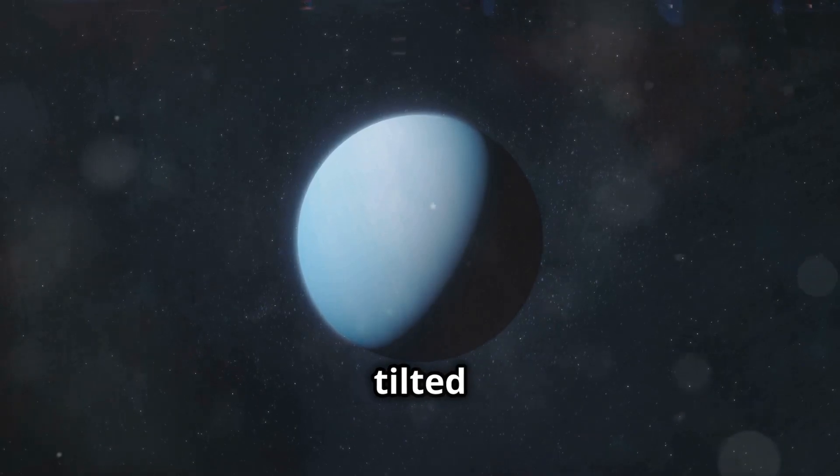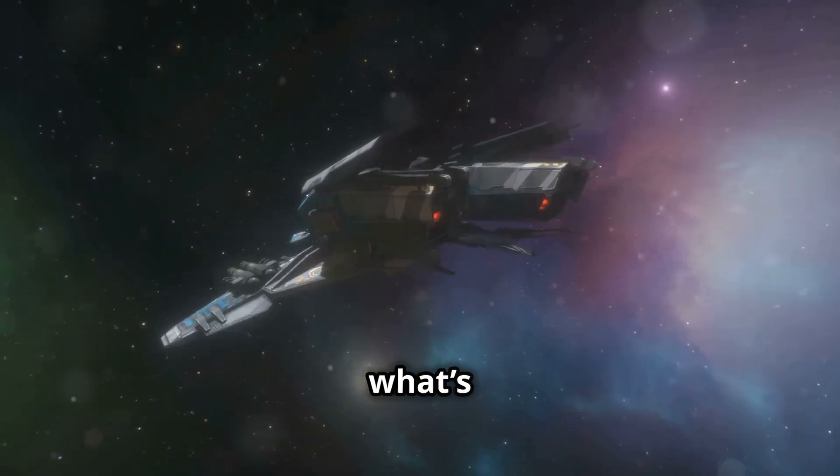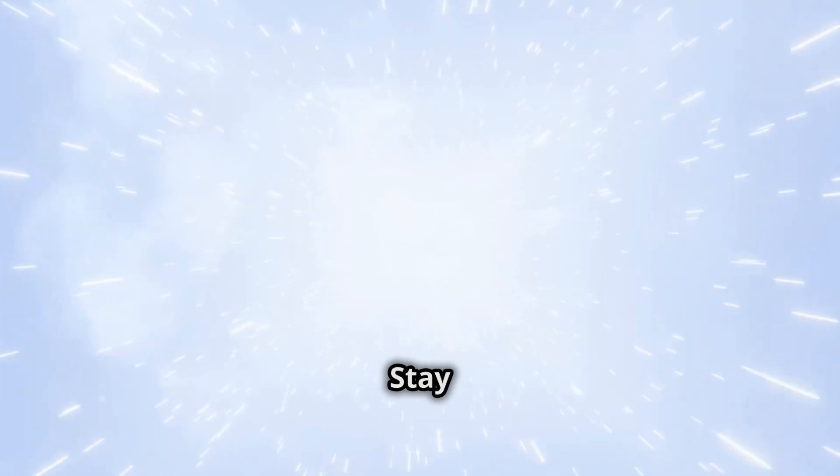It revealed Uranus's tilted axis and Neptune's supersonic winds, the fastest in the solar system. But what's beyond the planets? What secrets did Voyager uncover as it left the solar system? Stay tuned, it gets even more mind-blowing.